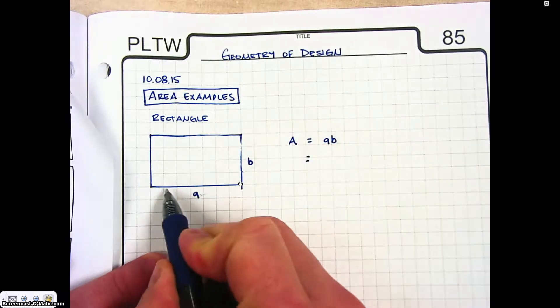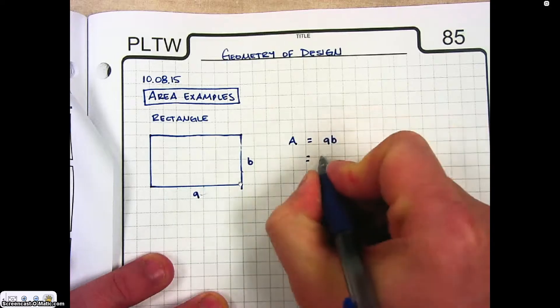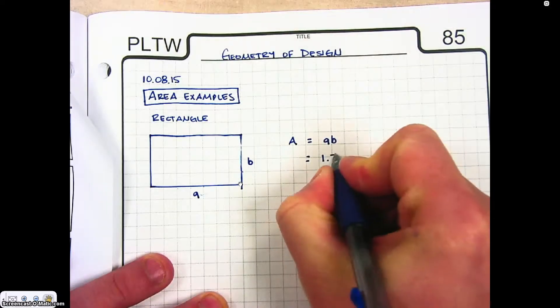In this case, our A is 1, 2, 3, 4. That's 1 inch. 1, 2, 3. 1.75 inches.